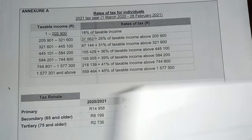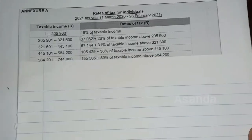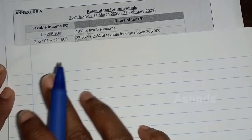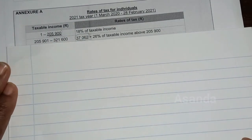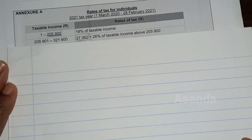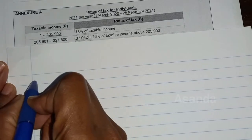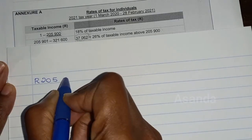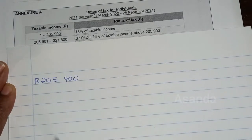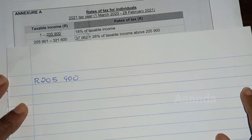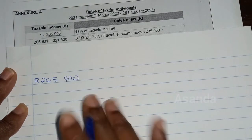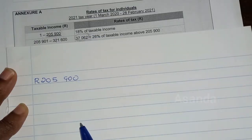Let's do the calculation. What is the maximum amount on tax bracket number one? It is actually 205,900. So this is the amount we are now going to use to calculate tax, and then we should be getting this amount.